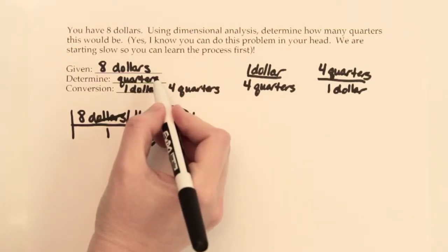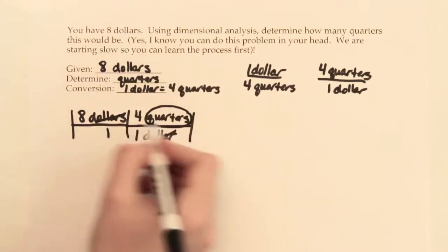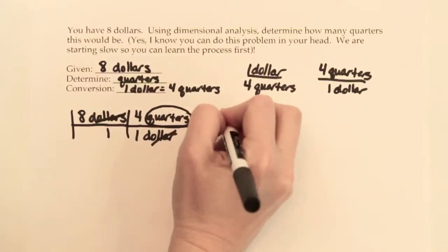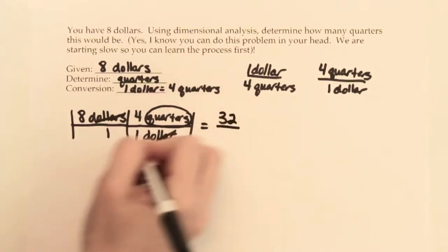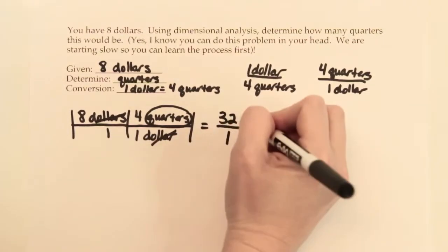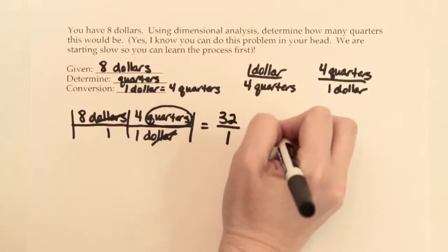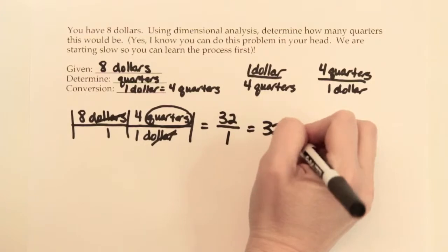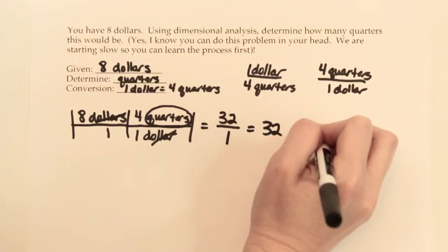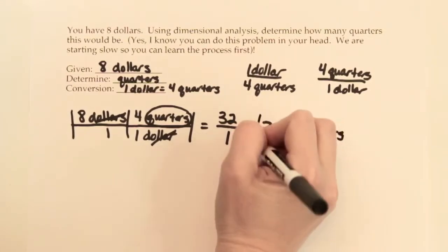Now, you just multiply across. 8 times 4 is 32. On the bottom, 1 times 1 is just 1. 32, and our unit would be quarters. $8 is the same thing as 32 quarters.